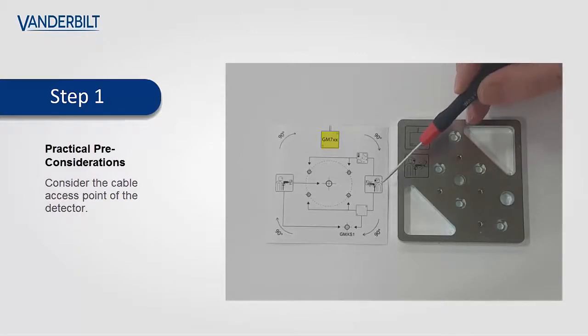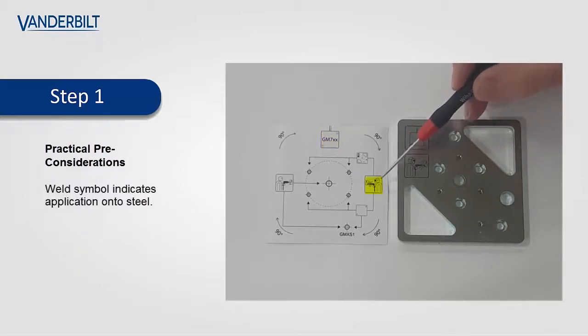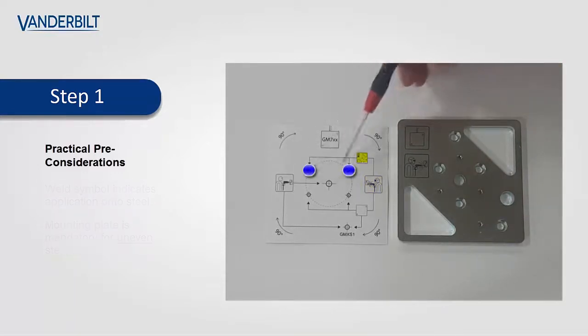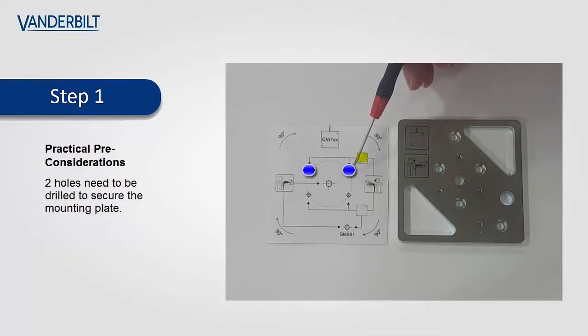As we're installing onto a steel surface, we follow the weld symbol, and the option we are selecting here is the mounting plate. If we follow the lines and the arrows, it indicates the two holes which need to be secured to the steel surface.